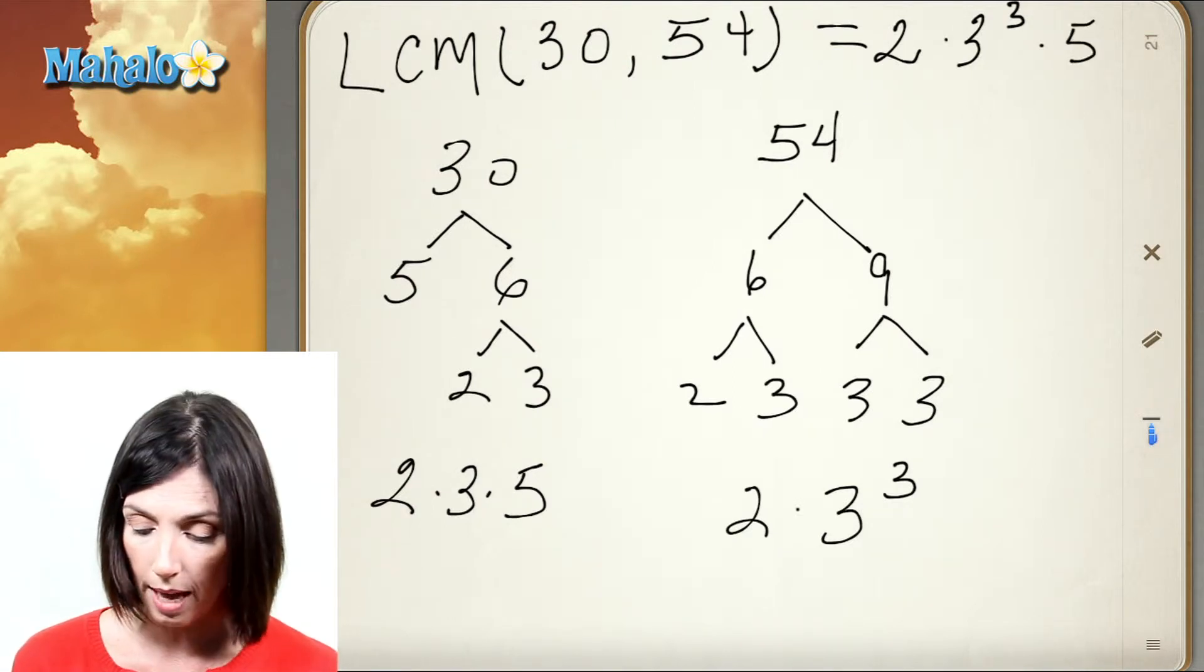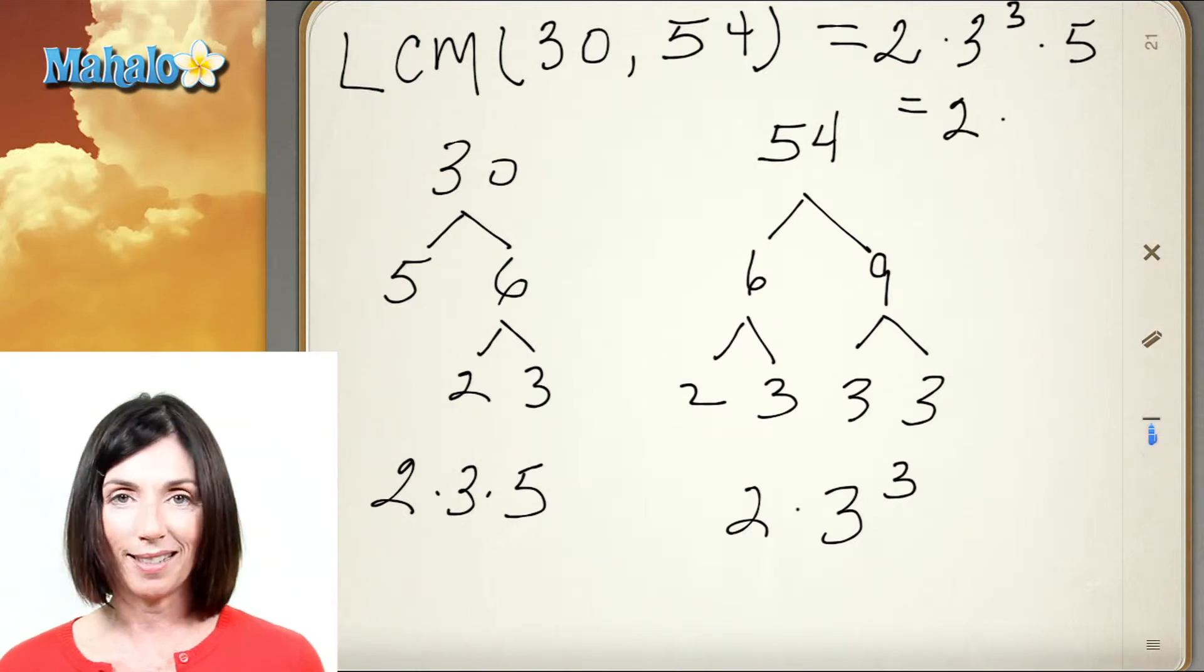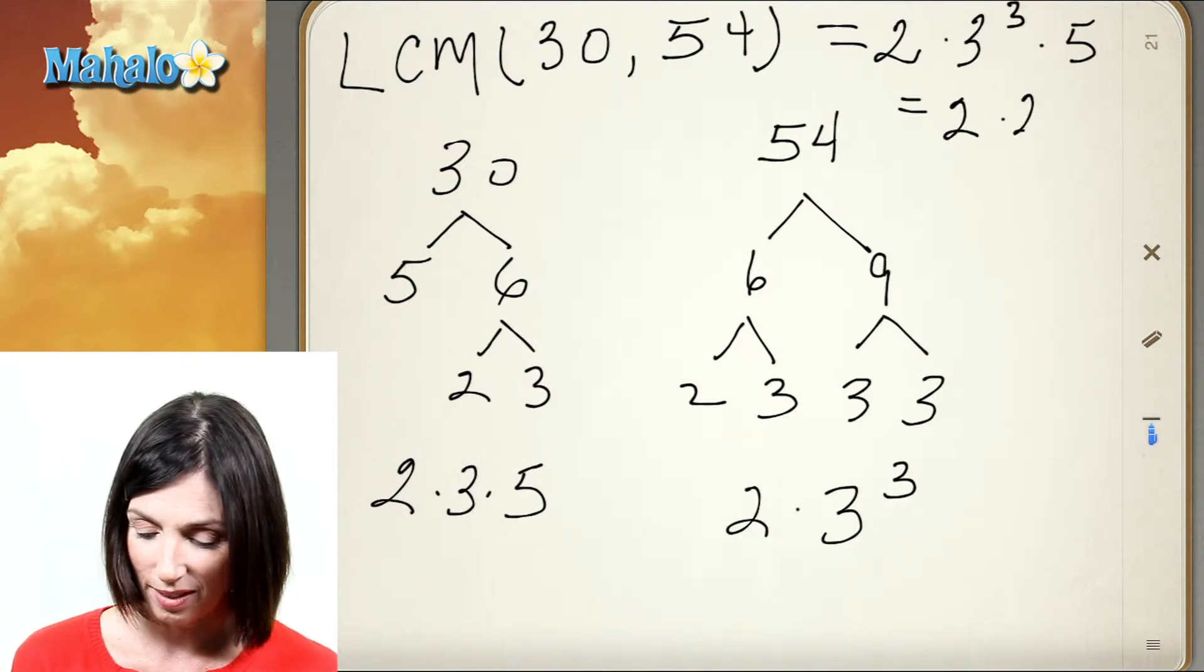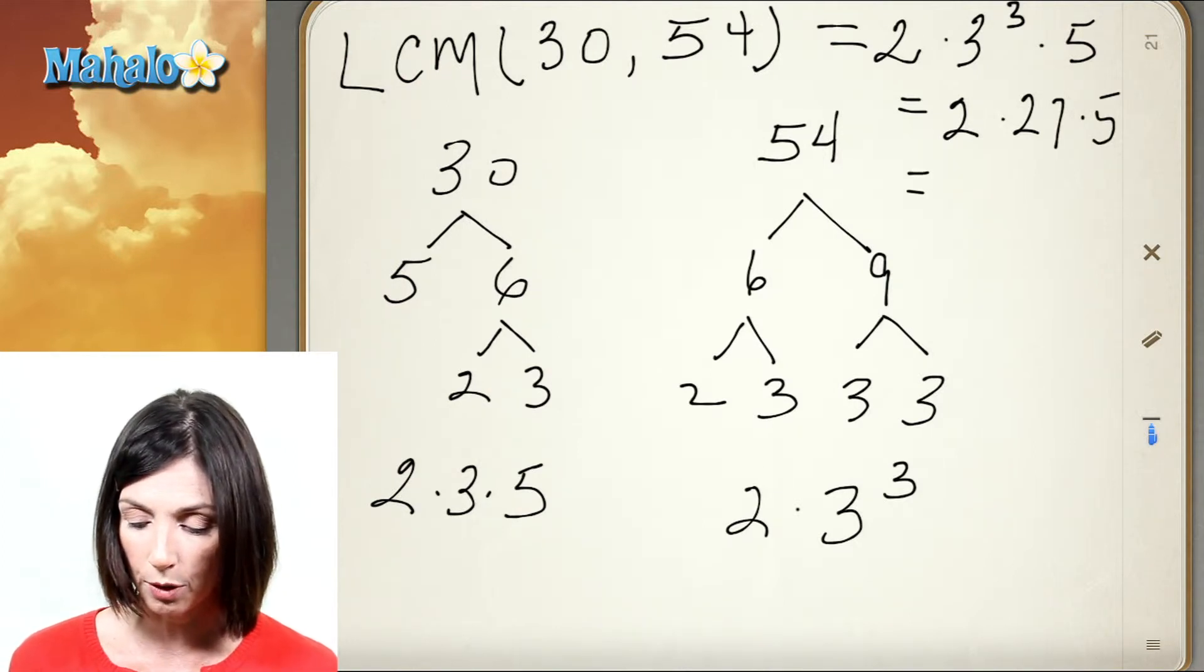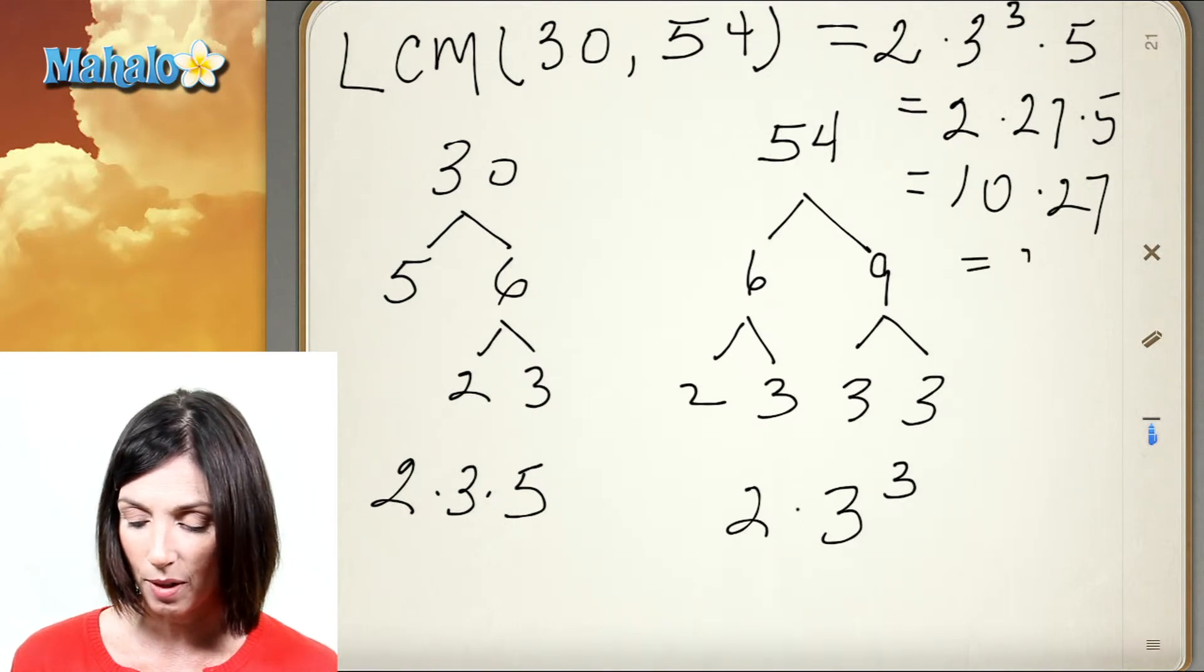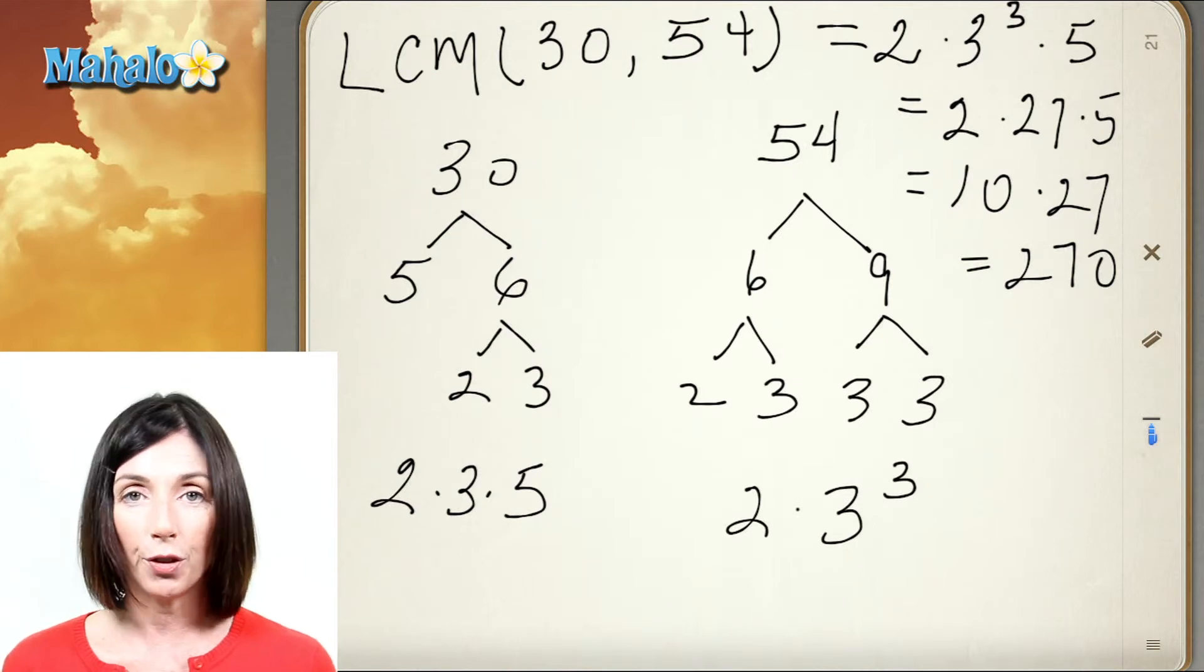So let's see what we get. We have 2 times 3 times 3 is 9 times 3 is 27 times 5. What is 2 times 27 times 5? I know 2 times 5 is 10 and 10 times 27 is 270. So the least common multiple of 30 and 54 is 270.